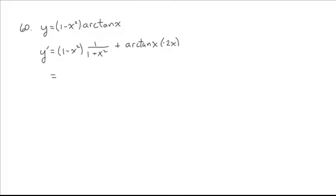Not a whole lot we can do on this one, because this one is minus and this one is plus. That's just going to be 1 minus x squared over 1 plus x squared, and then we've got minus 2x arctan of x.